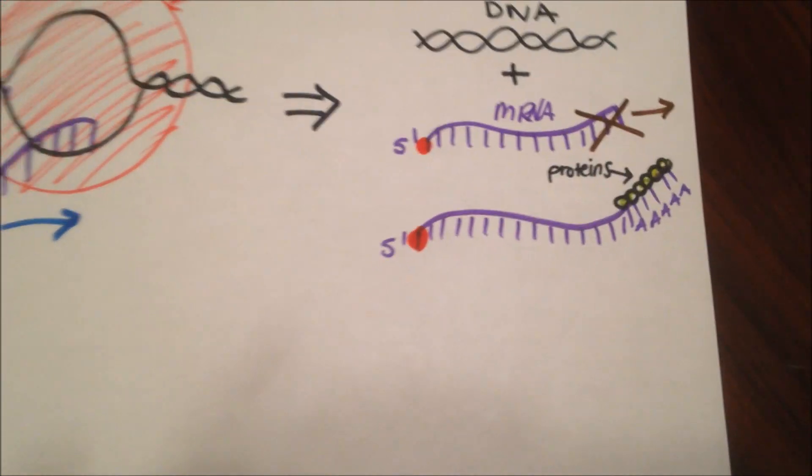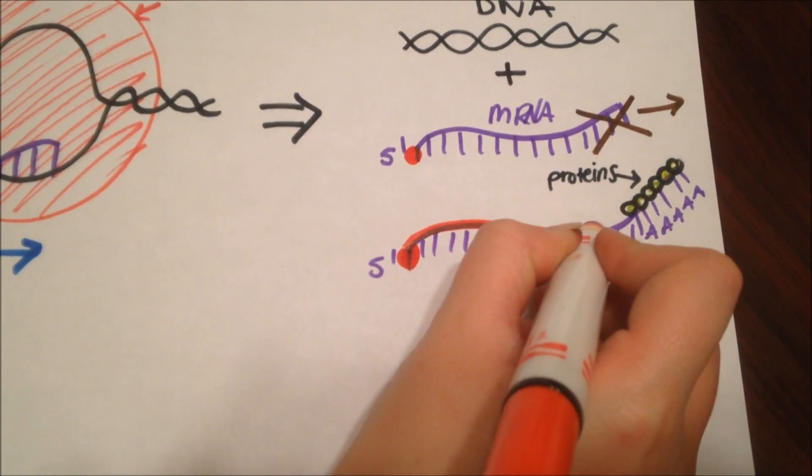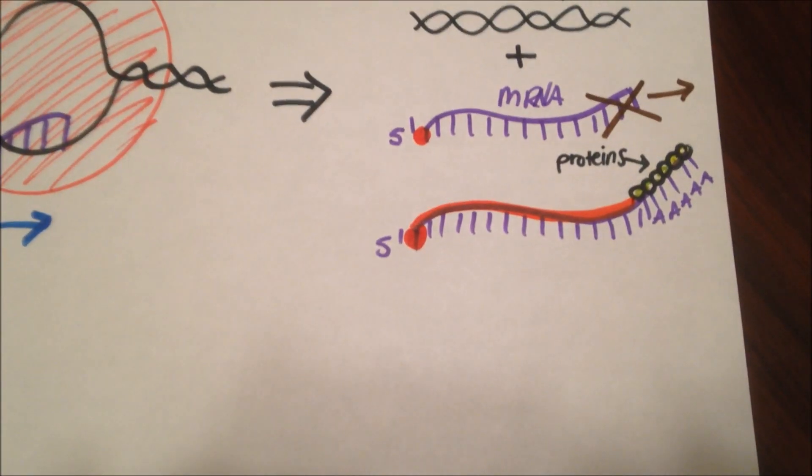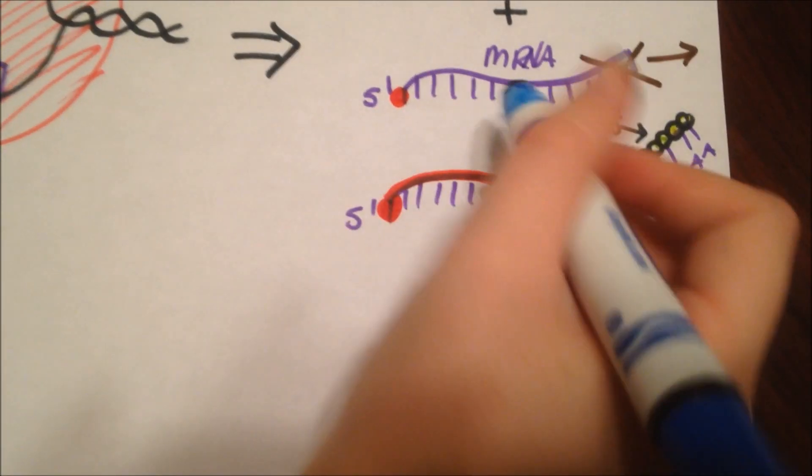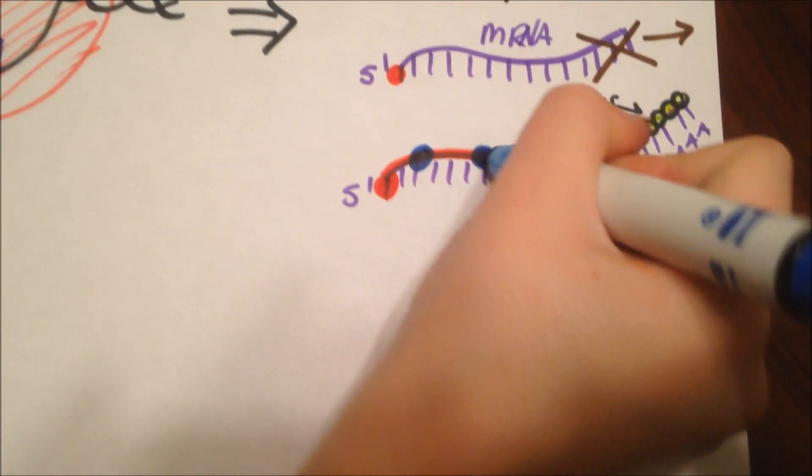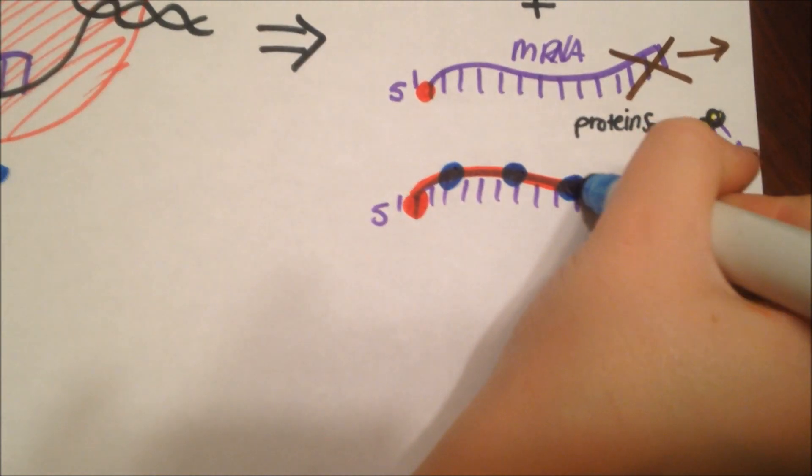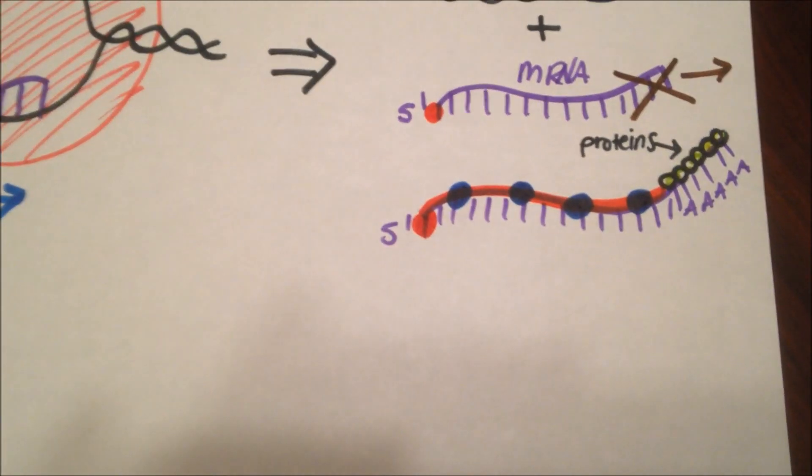Now, what happens next is splicing, and then the mRNA can be mature. On the mRNA, there are segments called introns and exons. The exons are red, and the introns are blue. The exons are what stays in splicing. These hold traits that are expressed, while introns, which get spliced off, have traits that aren't expressed.